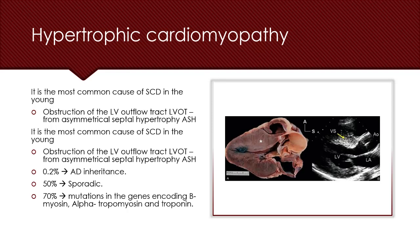Hypertrophic cardiomyopathy is inherited in an autosomal dominant pattern, but in 50% of patients it has a sporadic occurrence. In 70% of all patients, hypertrophic cardiomyopathy occurs as a result of mutations in the genes encoding for beta-myosin, alpha-tropomyosin, and troponin proteins of the myocardium.